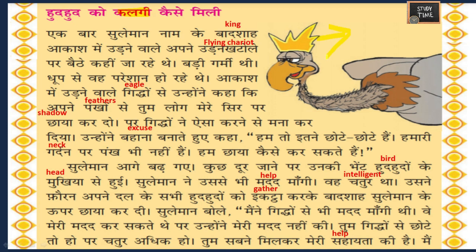Ek baar Sulayman naam ke baadshah akash mein udne waale apne udankatole par baithe kahi ja rahe the. One day, Sulayman, a king, was sitting in a flying chariot and was flying in the sky. Badi garmi thi - it was very hot, and he was troubled by the heat. He saw eagles flying in the sky and asked them to give him shadow with their feathers.